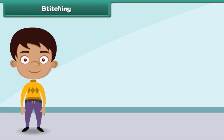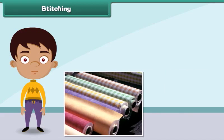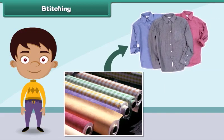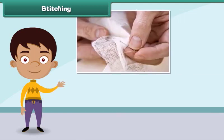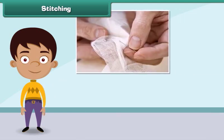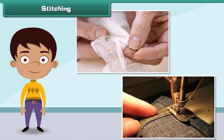Stitching is the process by which fabrics are converted into clothes. It involves sewing a fabric with needle and thread. In olden days stitching was done by hand, but nowadays stitching is done with machines.